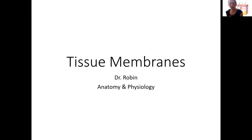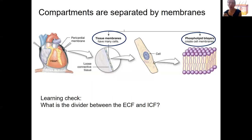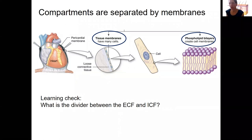To put this into context, remember that our body is compartmentalized — we have these different organized compartments at various levels. Compartments are all separated by membranes. Cell membranes are one type; tissue membranes are another. We talked about cavities in the first week and mentioned they are separated by membranes. Here's an example of a serous membrane surrounding the heart, separating it from the rest of the thoracic cavity, which has its own membrane as well.